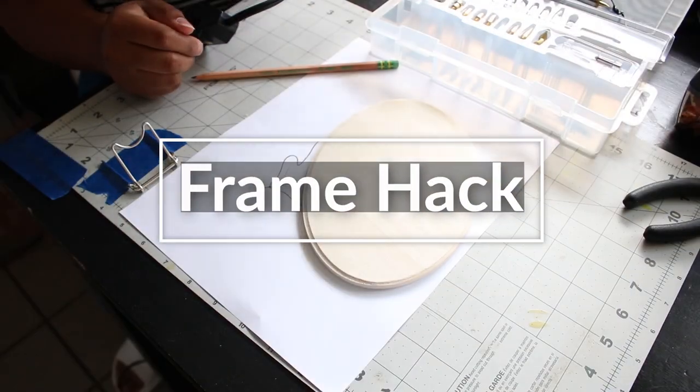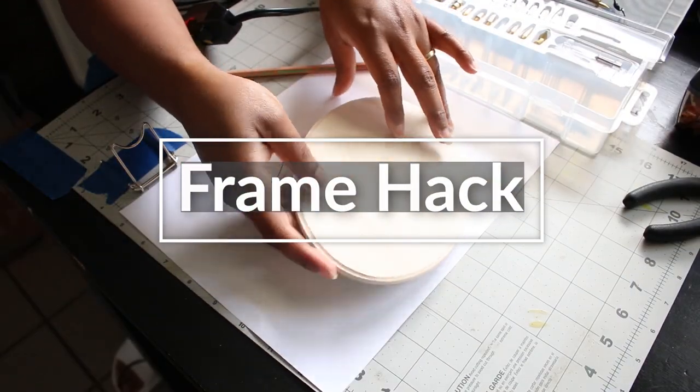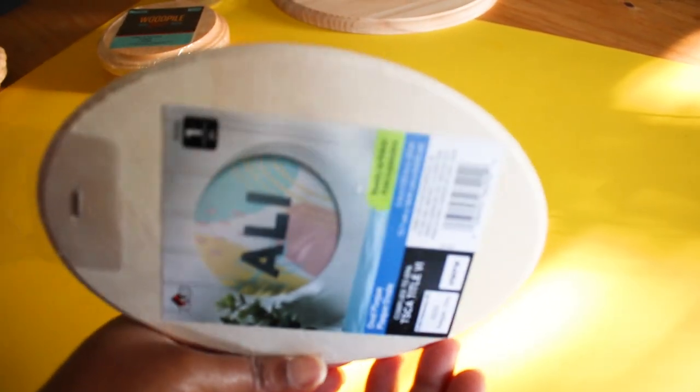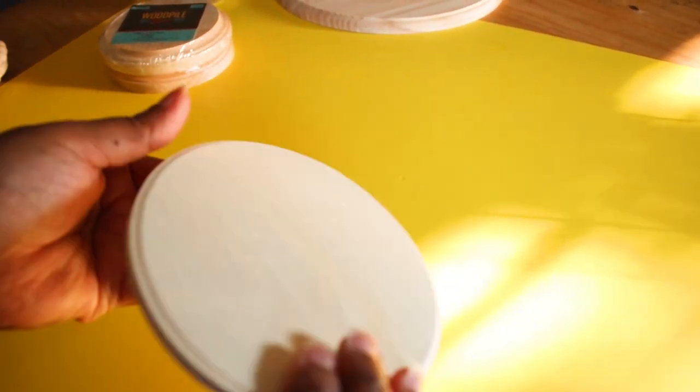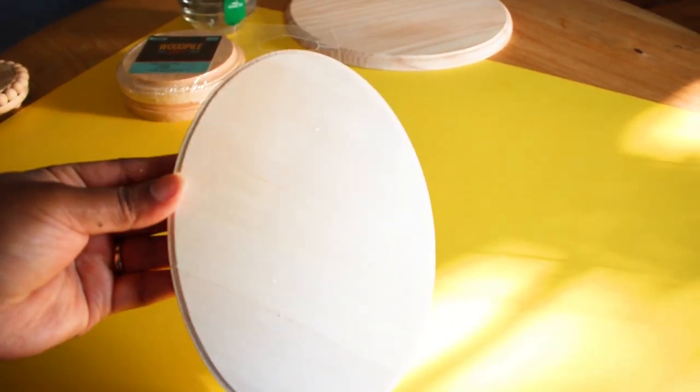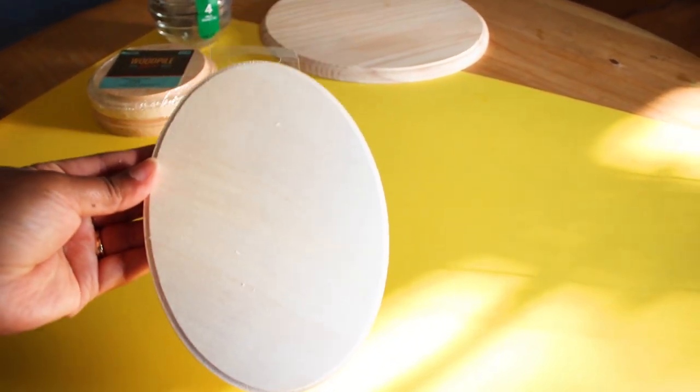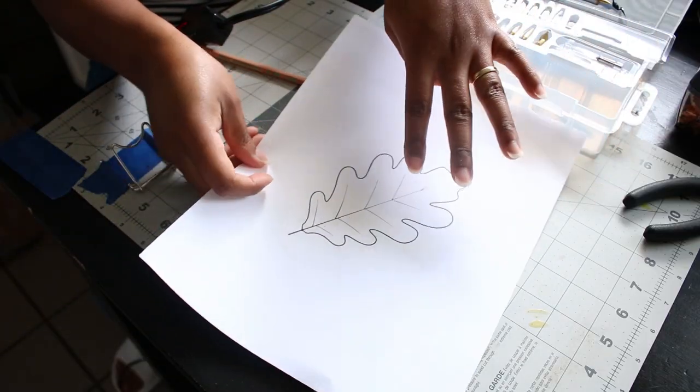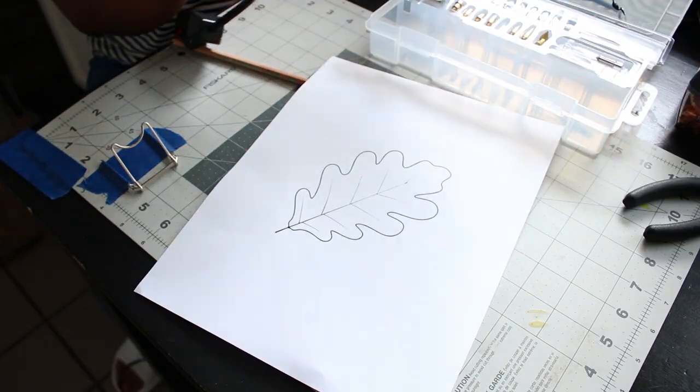Now, this next wood piece is not round. It's an oval. But I wanted to share it anyway because I found this for just a dollar at Walmart. I wanted to use it for a minimal fall sign.